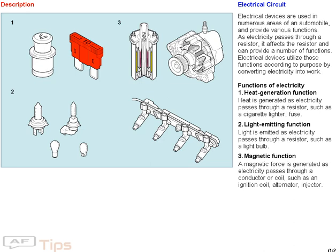2. Light emitting function. Light is emitted as electricity passes through a resistor, such as a light bulb.